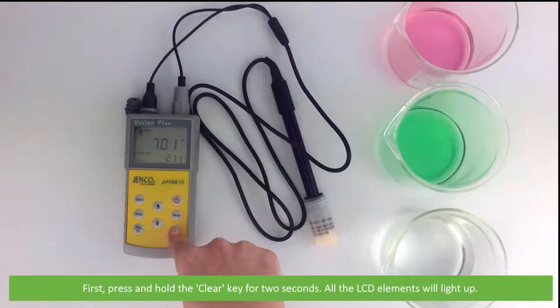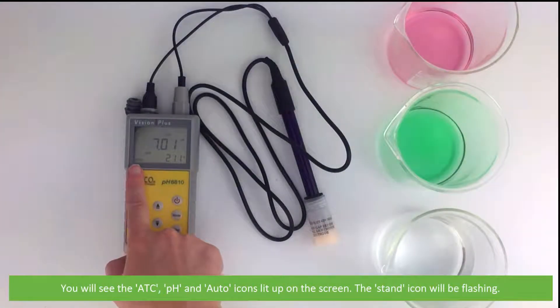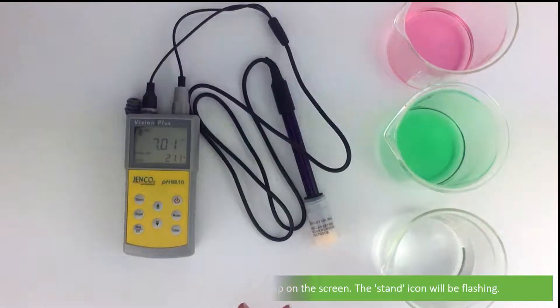First, press and hold the clear key for two seconds. All the LCD elements will light up. You will see the ATC, pH, and auto icons all lit up on the screen. The stand icon will be flashing.